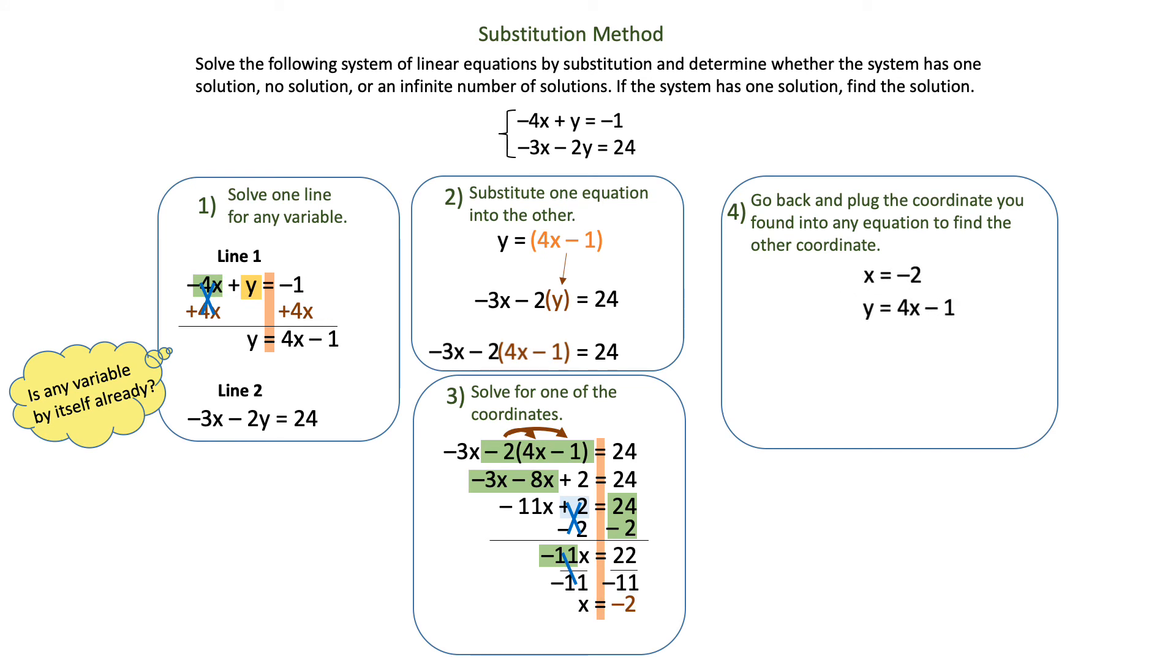The easiest place to do that is y equals 4x minus 1 that I found at the very beginning of the problem. All I have to do is take that negative 2 and substitute it for x, and it will give me an easy way to find what the y coordinate is.